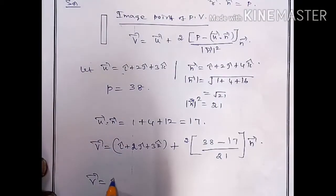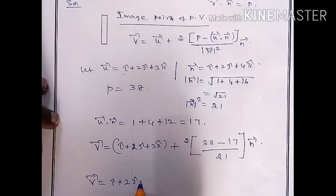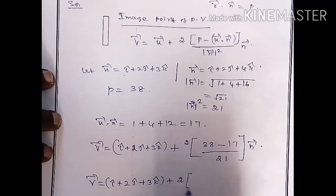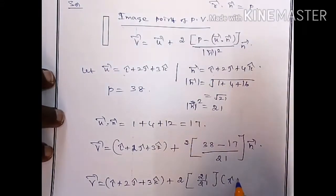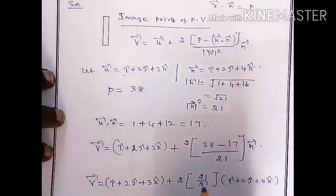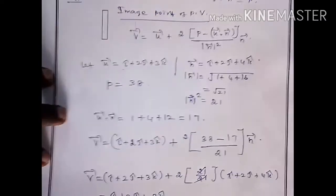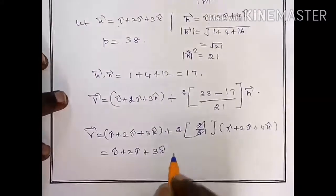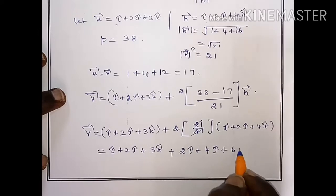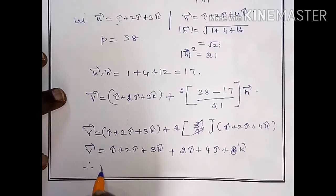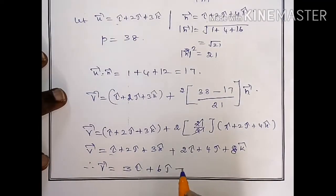v vector equal to i cap plus 2j cap plus 3k cap, plus 2 times (38 minus 16) over 21 into n cap value i cap plus 2j cap plus 4k cap. The 21 cancels, remaining i cap plus 2j cap plus 3k cap, plus 2 times of 2i cap plus 4j cap plus 8k cap.